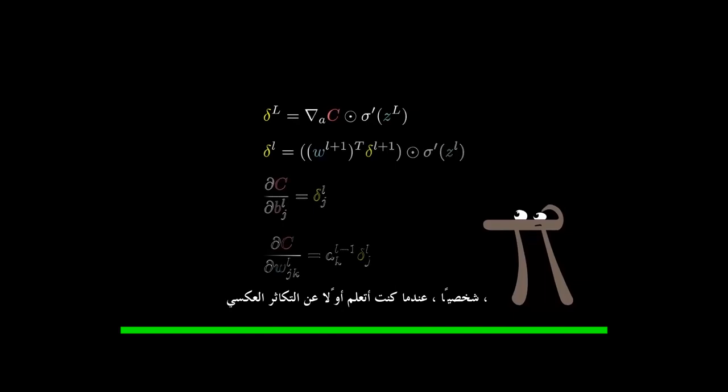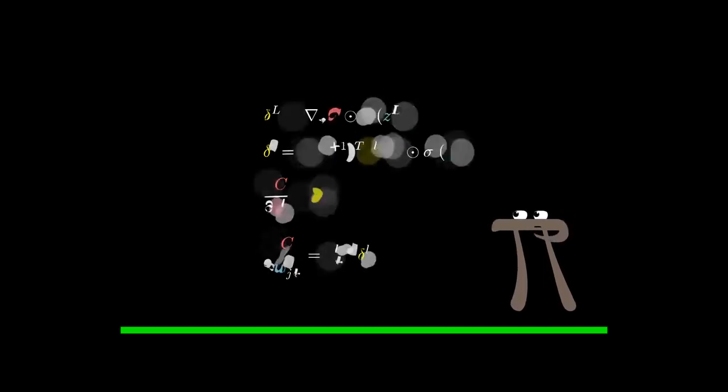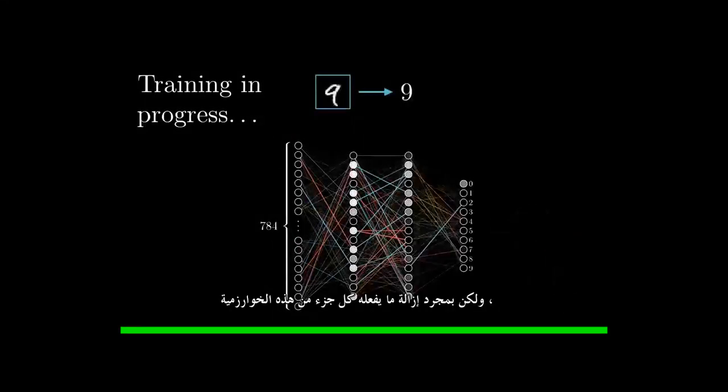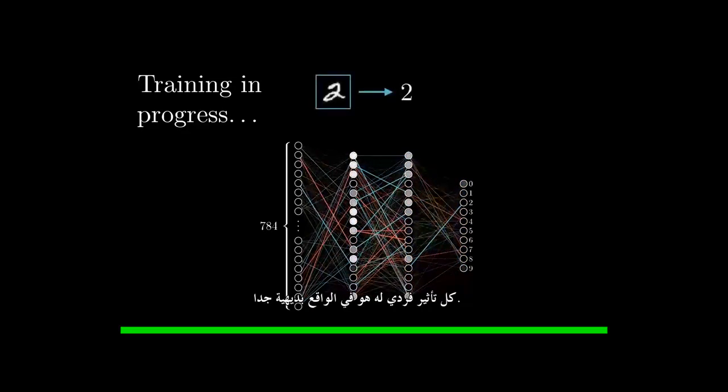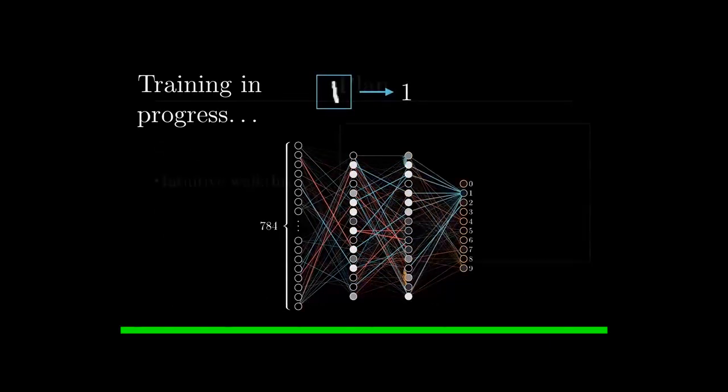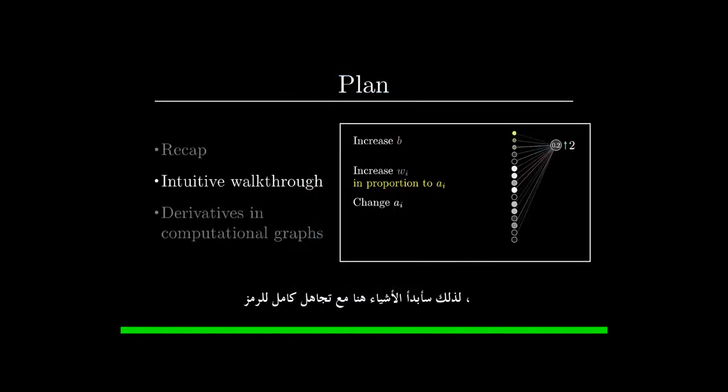Personally, when I was first learning about backpropagation, I think the most confusing aspect was just the notation and the index chasing of it all. But once you unwrap what each part of this algorithm is really doing, each individual effect that it's having is actually pretty intuitive. It's just that there's a lot of little adjustments getting layered on top of each other. So I'm going to start things off here with a complete disregard for the notation, and just step through those effects that each training example is having on the weights and biases.